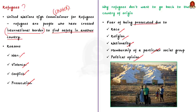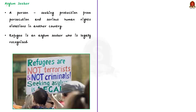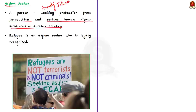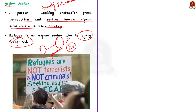Now let us see how a refugee is different from an asylum seeker and a migrant. According to Amnesty International, an asylum seeker is a person who has left their country and is seeking protection from persecution and serious human rights violations in another country. The difference between an asylum seeker and a refugee is that an asylum seeker becomes a refugee once he is legally recognized. When people move from one country to another due to fear of persecution, they are initially called asylum seekers, and once legally recognized, they are called refugees.